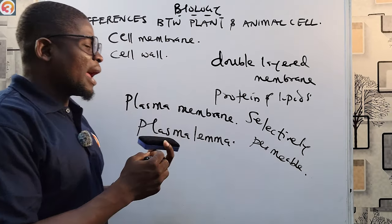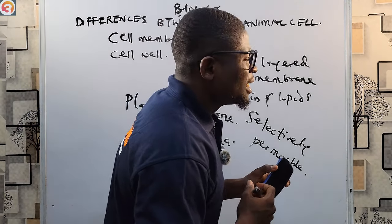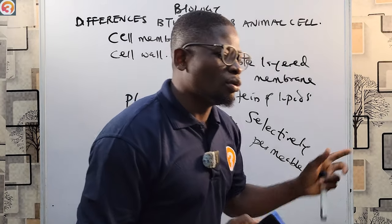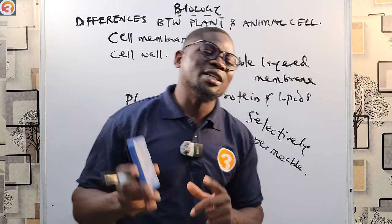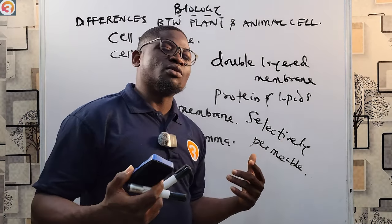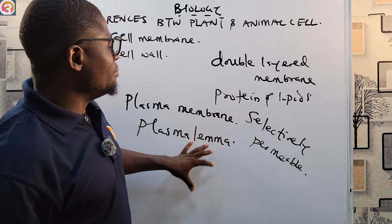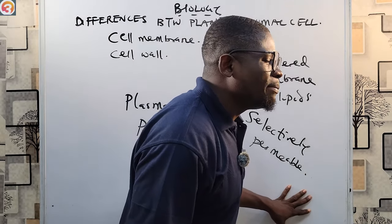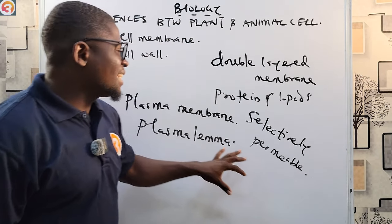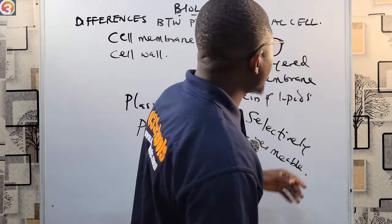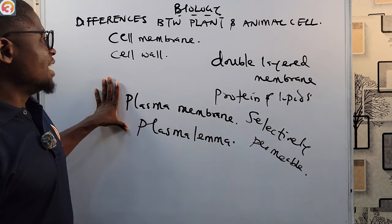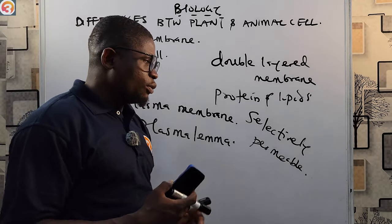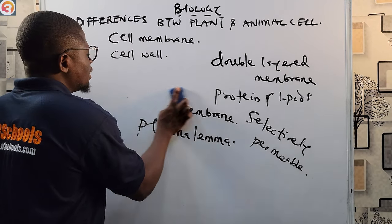Selectively permeable means it allows some substances to pass through it while not allowing others. It selects what goes through it. The cell membrane is present in both plant and animal cells.